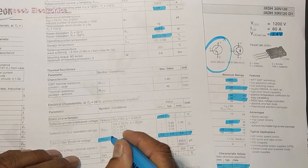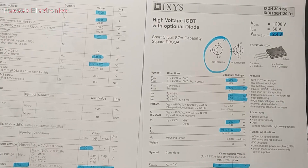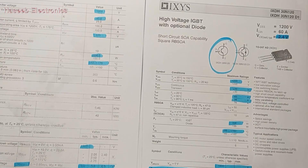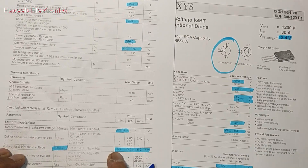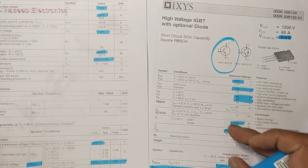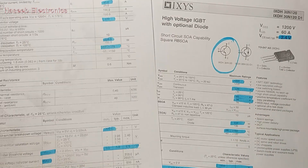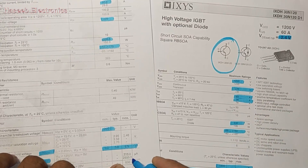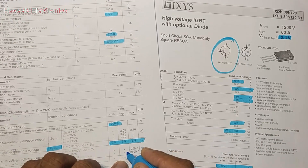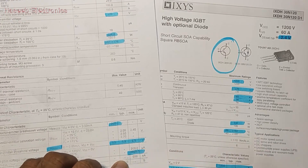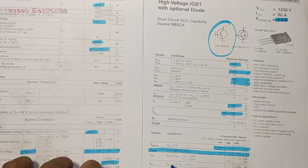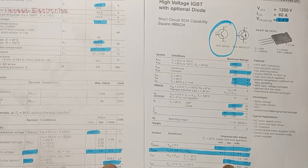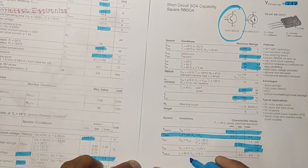VGE threshold: the original ranges from 4.5 to 6.5 V, and the replacement ranges from 5 to 6.5 V — so it is more sensitive, which is good. ICES forward leakage current is 2500 microampere (2.5 mA) on both — the same.